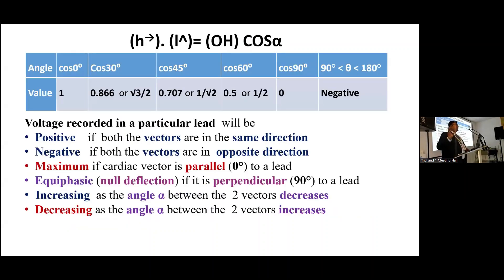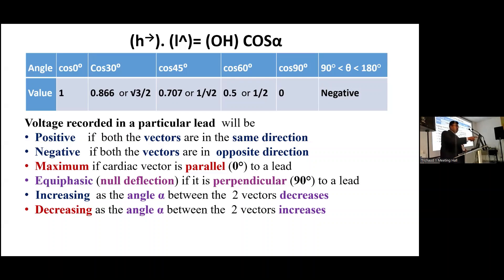In applying the Cardiac Vector Theory, as the angle increases, the cosine value decreases. The voltage recorded in a particular lead will be positive when both vectors are in the same direction, negative when both vectors are in opposite directions (because cos value is negative), and maximum when parallel (cos 0° = 1), and zero — null or equiphasic deflection — when perpendicular (cos 90° = 0). Voltage and the angle are inversely related.